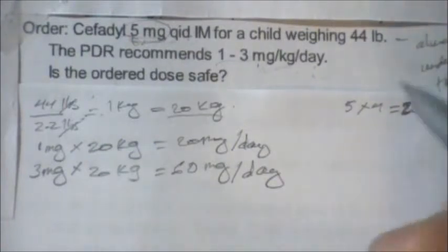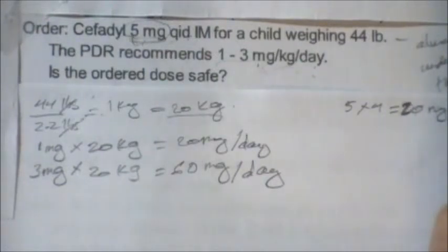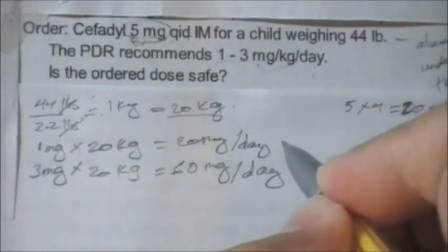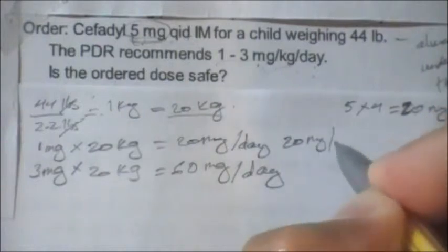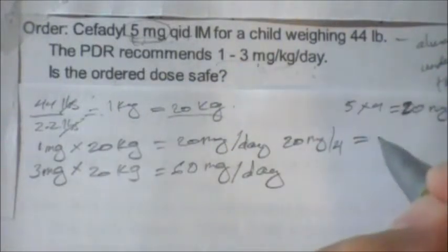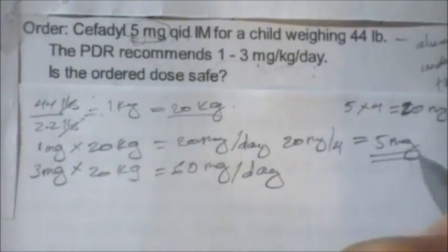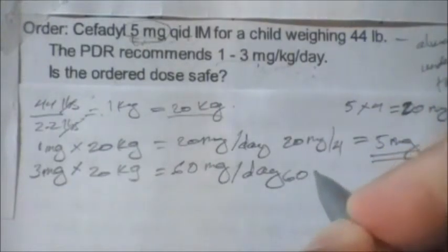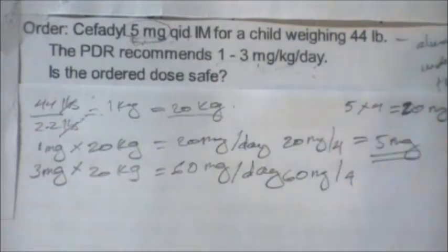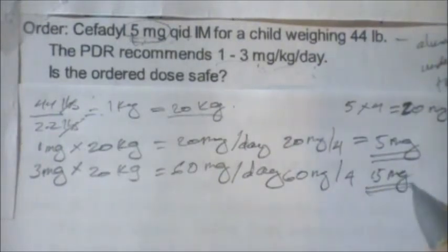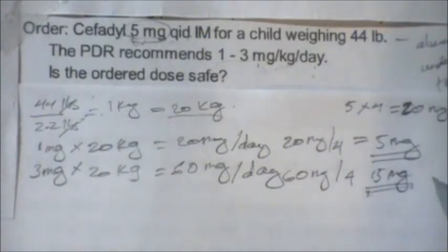So we can say this is a safe dose. We can also verify it the other way: 20 milligrams divided by 4 doses equals 5 milligrams — that's the minimum per-dose amount. For the maximum, 60 milligrams divided by 4 equals 15 milligrams. The doctor could order as high as 15 milligrams, but the ordered 5 milligrams is safe for this 44-pound child.